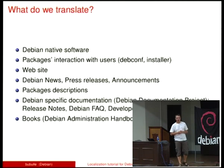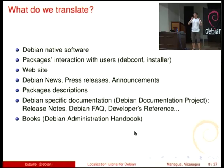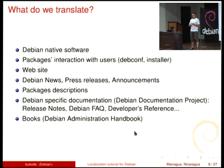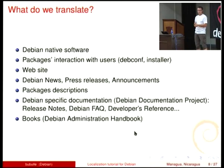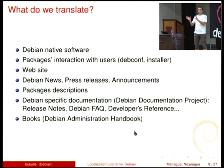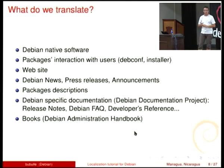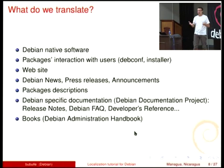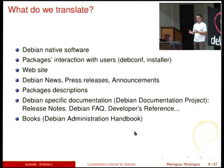What do we translate in Debian? Many things. The most important are Debian native software such as dpkg, apt, aptitude, and many others — software we only have in Debian. The package interaction with users, such as debconf templates — the questions asked when you install a package, like 'What is the root password?' or 'What directory do you want to work on?' The installer also asks questions you need to read in your language. The website is one very important item for translators, including Debian news, press releases, announcements, and security announcements.